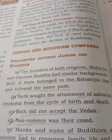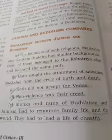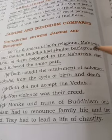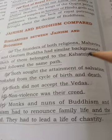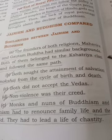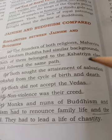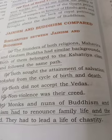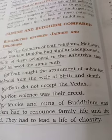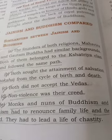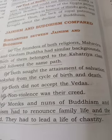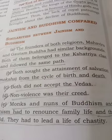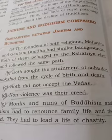Now we see the similarities between Jainism and Buddhism. The founders of both religions, Mahavira and Gautam Buddha, had similar backgrounds. Both belonged to the Kshatriya clan. Both sought the attainment of salvation — Moksha — from the cycle of birth and death.